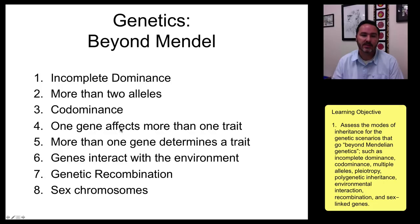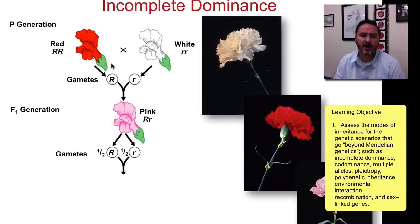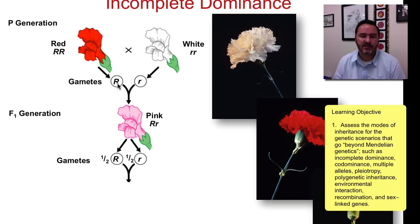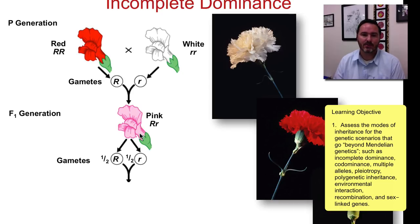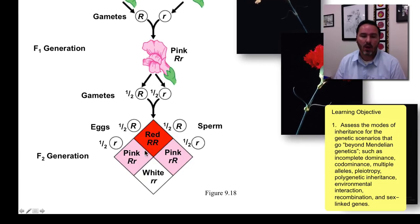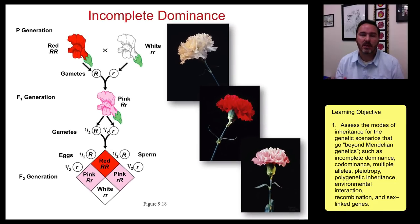Incomplete dominance, more than two alleles, codominance, one gene affecting more than one trait, more than one gene affecting one trait. Incomplete dominance is an interesting phenomenon where neither gene is dominant to the other. A good example is in snapdragons or carnations, where red and white come together. With a pure-breeding red and pure-breeding white cross, the F1 hybrid generation produces pink flowers — actual pink. The F2 generation cross then gives a 1 to 2 to 1 ratio for both phenotype and genotype, because both genes are activated and the product is an in-between result, such as pink being between red and white.